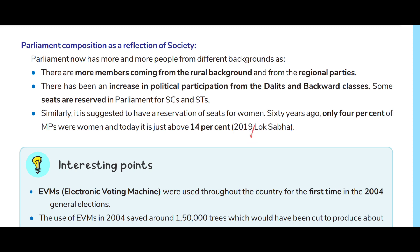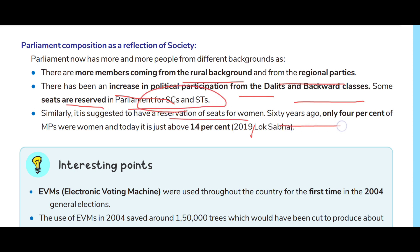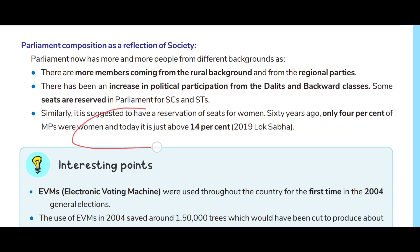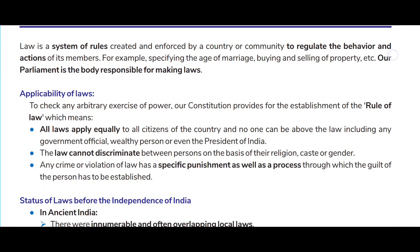Parliament composition reflects society. Parliament now has more people from different backgrounds, with more members coming from rural backgrounds and regional parties. There has been an increase in political participation from Dalit and backward classes. Some seats are reserved in Parliament for SCs and STs. It is suggested to have reservation of seats for women — 60 years ago only 4% of MPs were women; today it is just above 14%, according to 2019 Lok Sabha data.